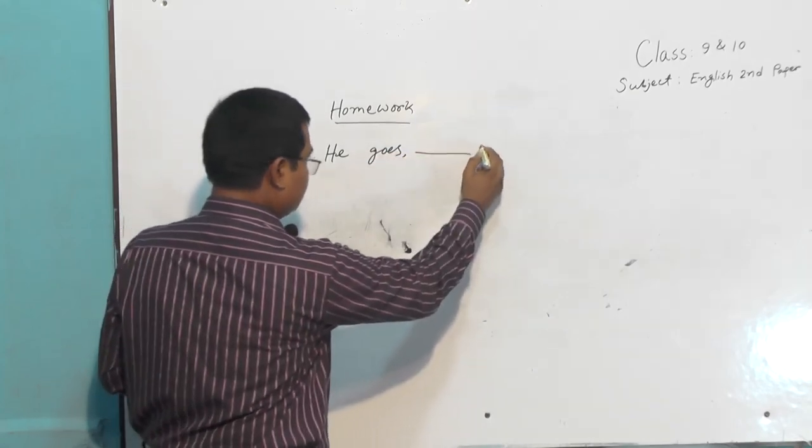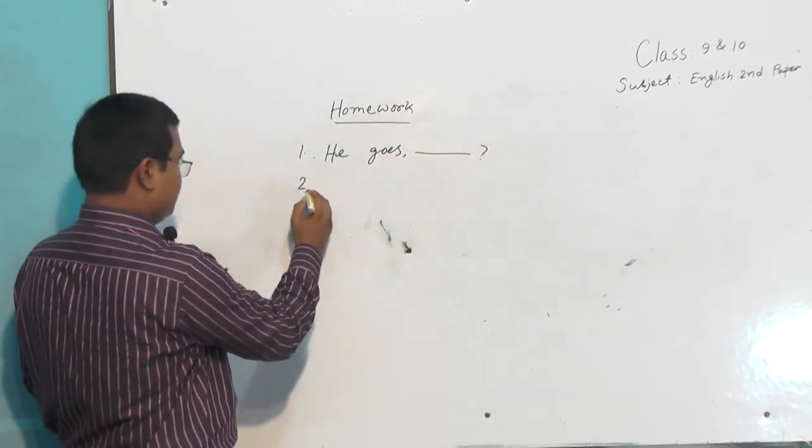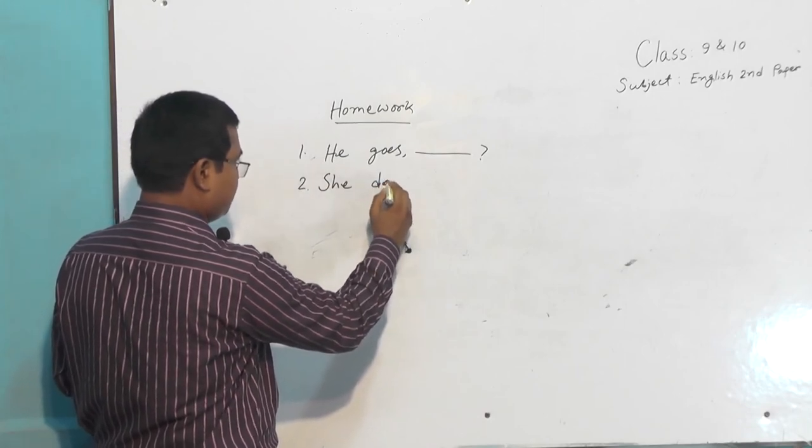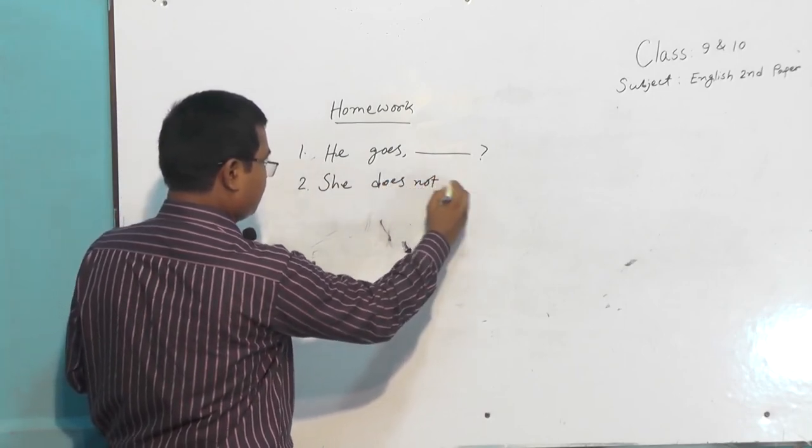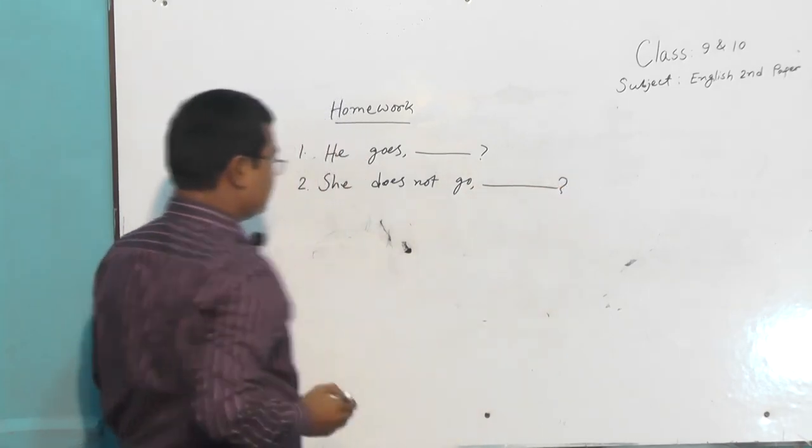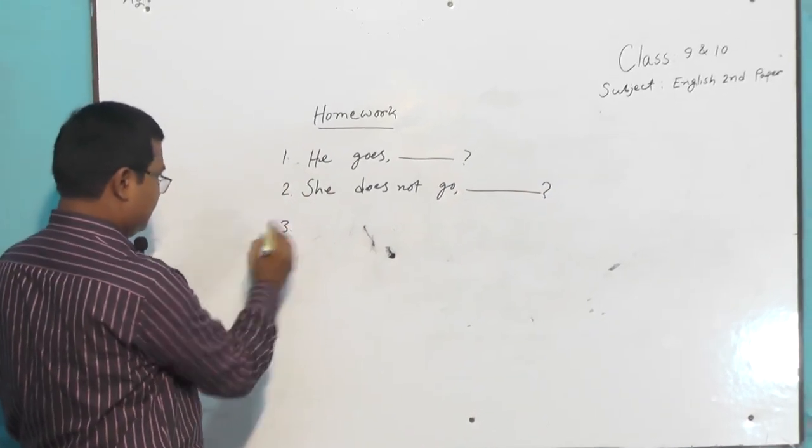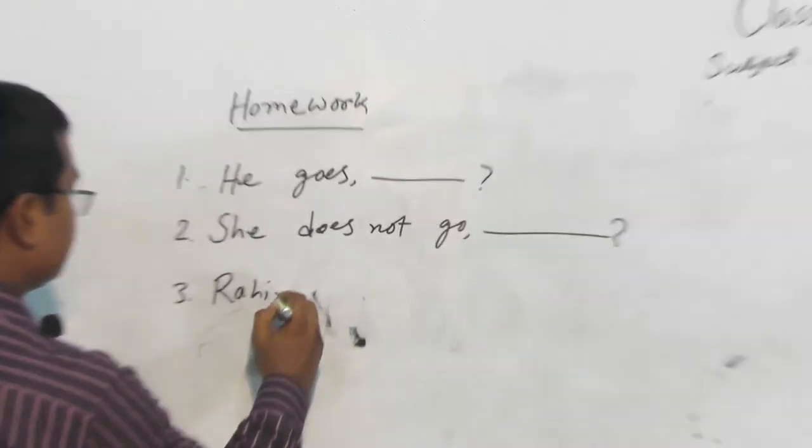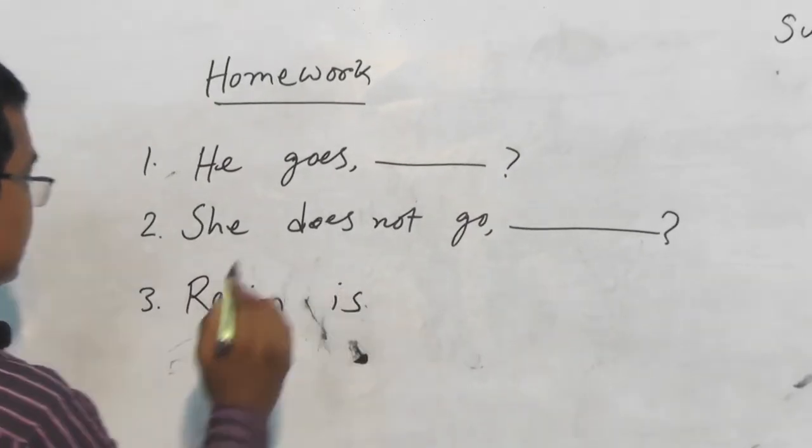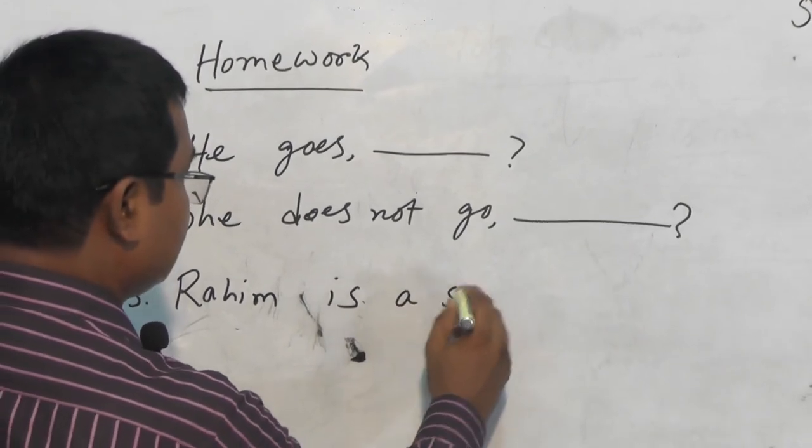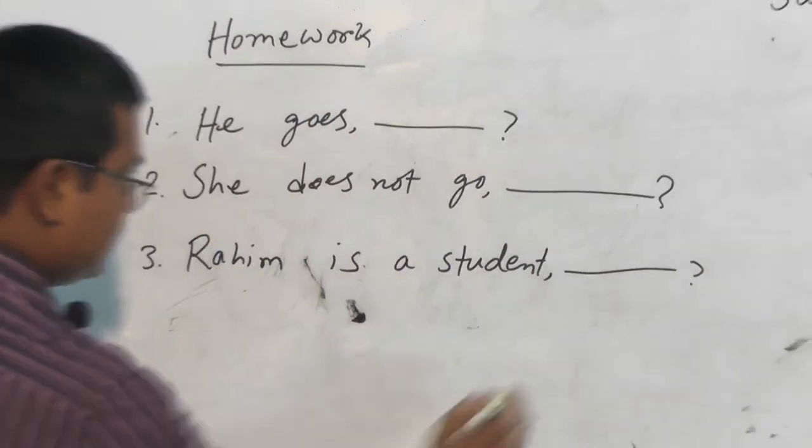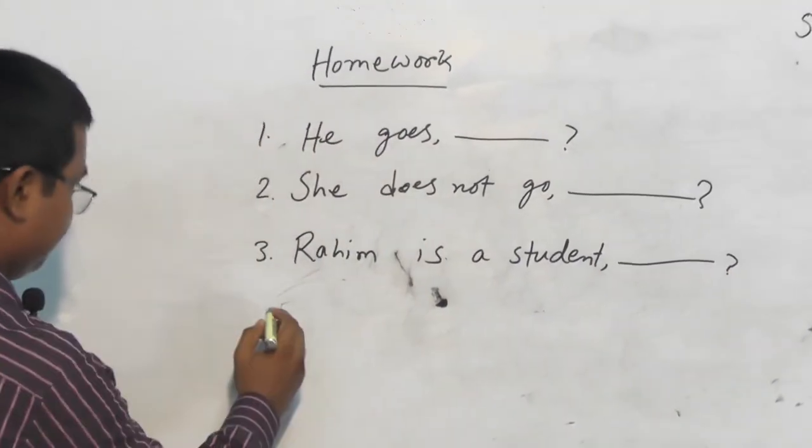Number one: 'He goes'. Number two: 'She does not go'. Number three: 'Rahim is a student'.